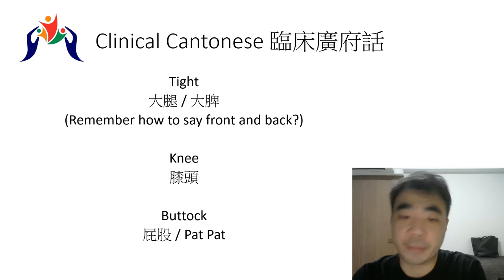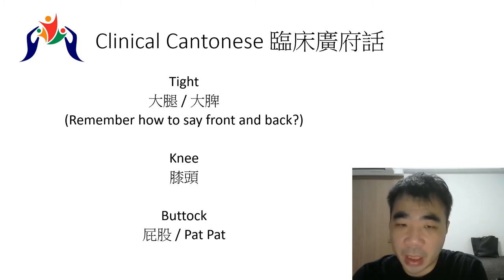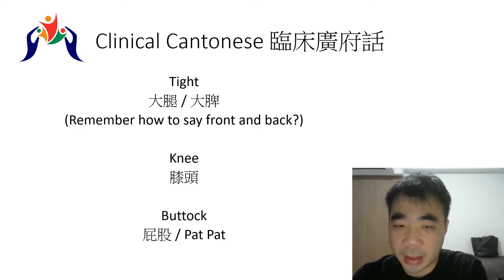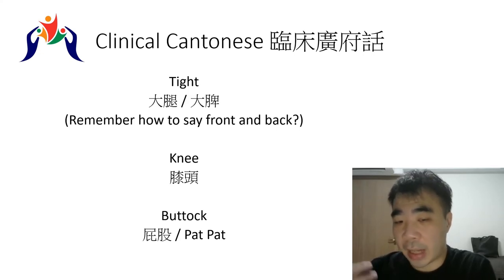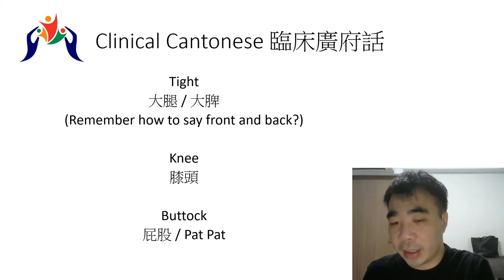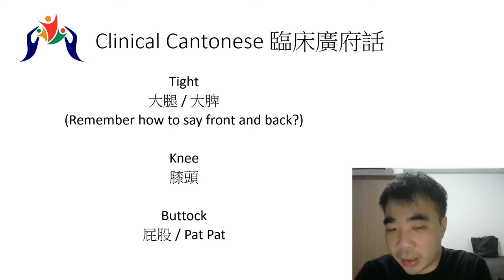Going down to the knee, it is called 膝頭 (sat tau) — very straightforward. Sometimes patients also ask about the buttock area. In casual Cantonese we say 屁股 (pei gu).